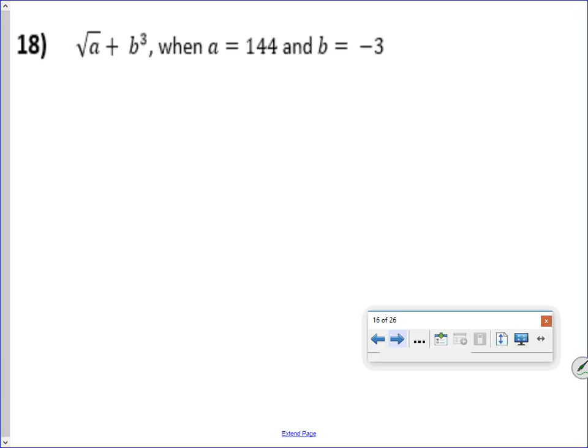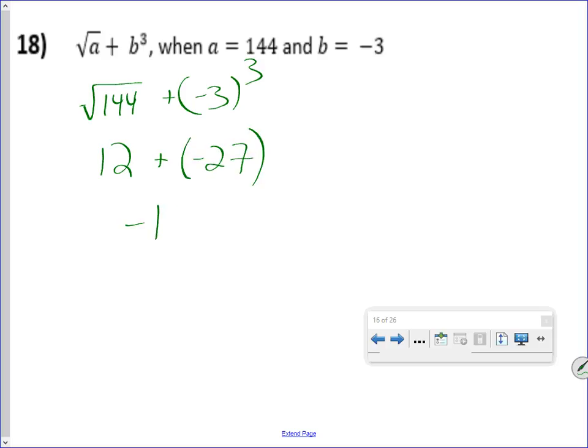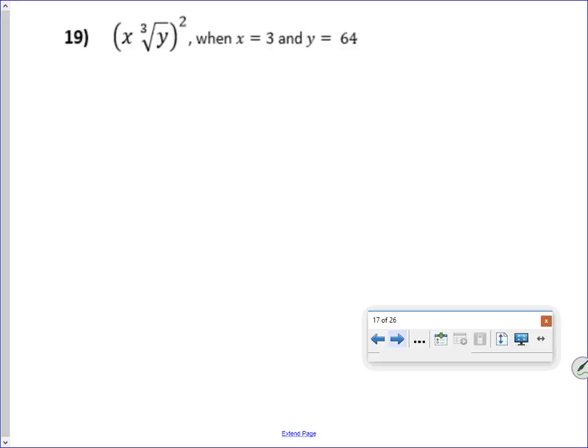Number 18 will be the square root of 144 plus negative 3 cubed. The square root of 144 is 12. Negative 3 cubed is negative 27. When I add those two numbers together, I will get negative 15. Once again, I know I'm going fast. Feel free to rewind. I'm just trying to get the video at a reasonable length.